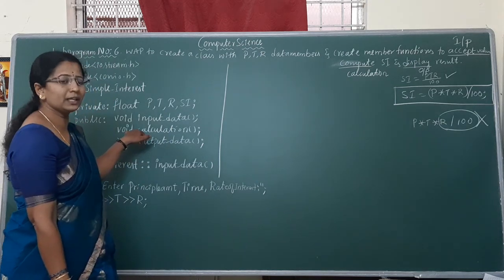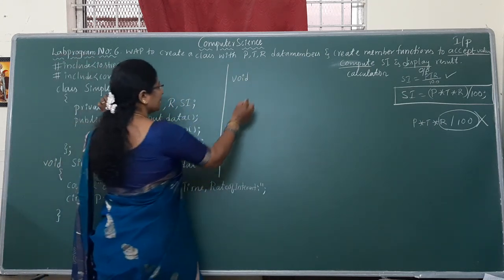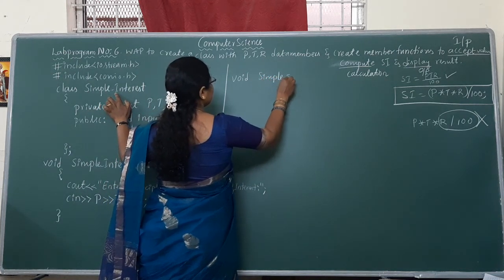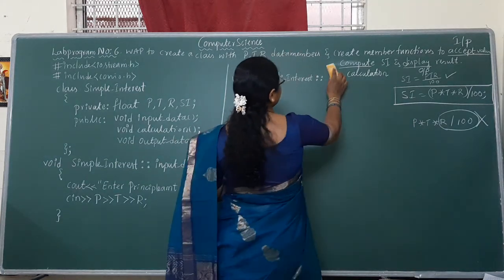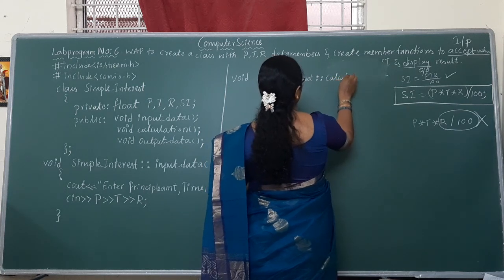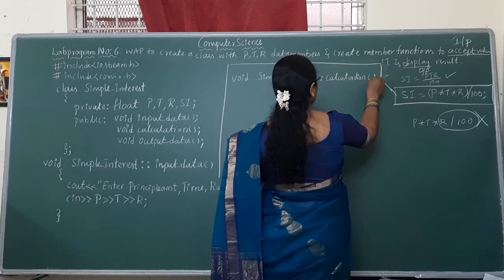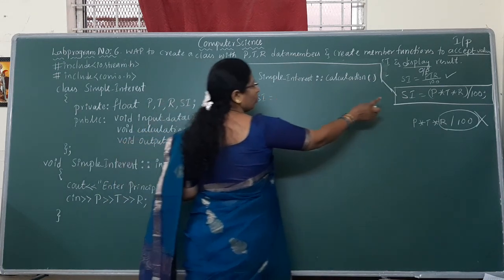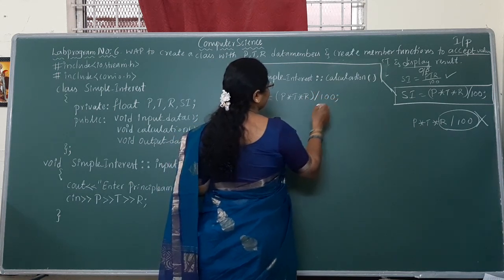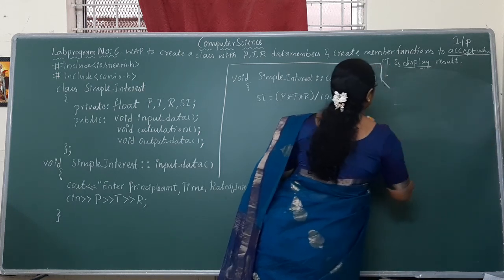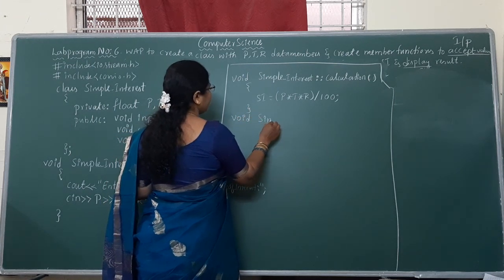Another function I am defining outside: calculation. The same syntax — return type void, class name simple_interest, scope resolution operator, then function name calculation. In the body, apply the formula: SI = (P * T * R) / 100. Then after finding the calculation, we need to display it in the output function.